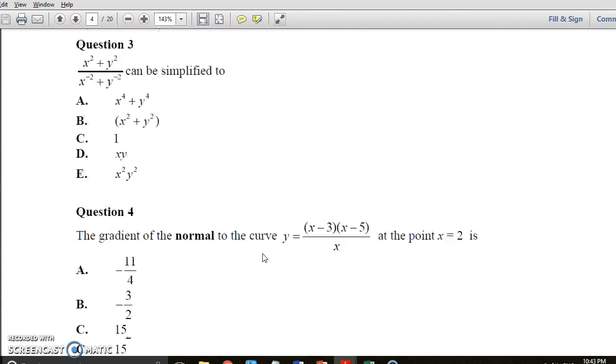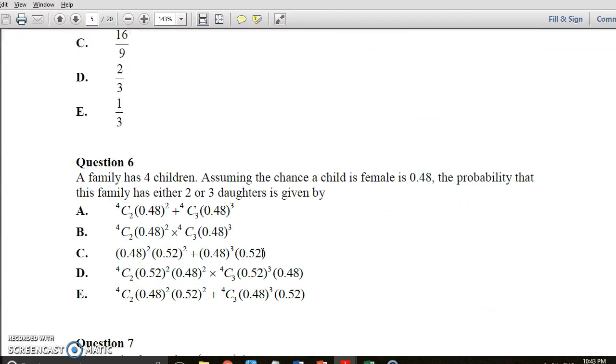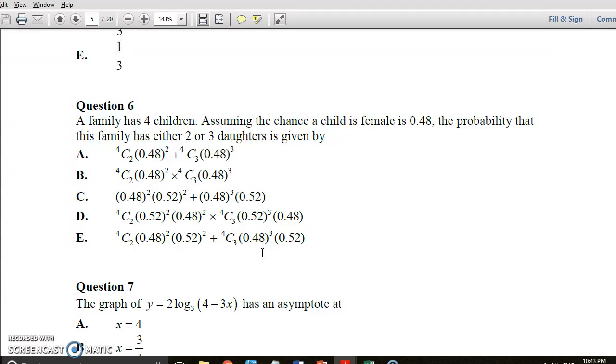So from there we're going to go to question six. Let's have a look. Question six, I think this is a probability question. Okay, so straight away looking at one of these I can see that it is some sort of binomial question given these are the options here. So a family has four children, assuming a chance of a child that is female is 0.48, the probability a family has either two or three daughters is given by.